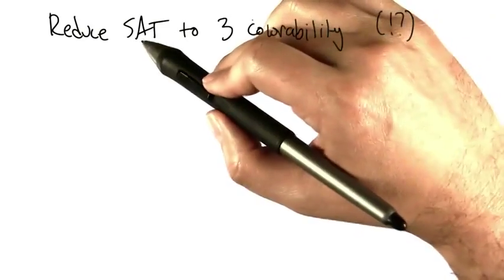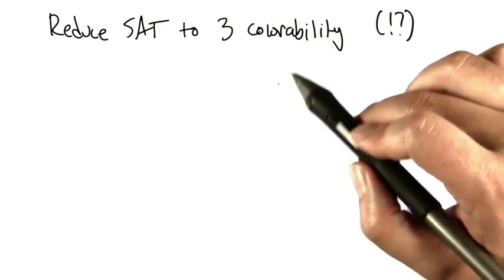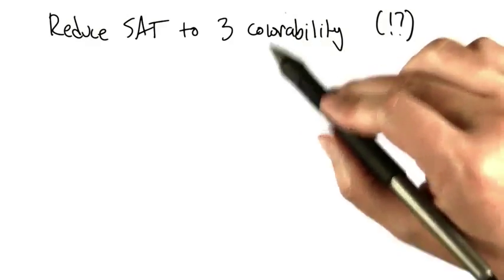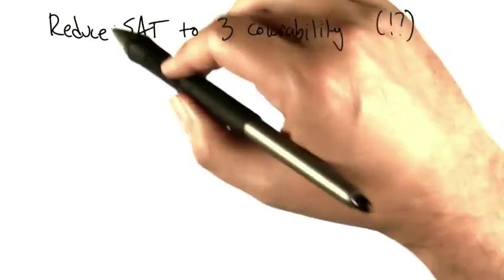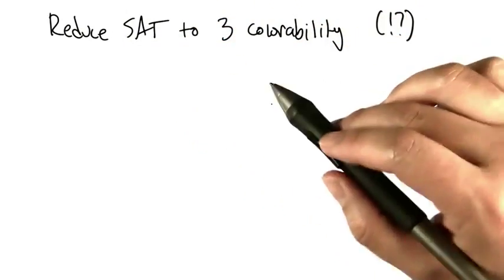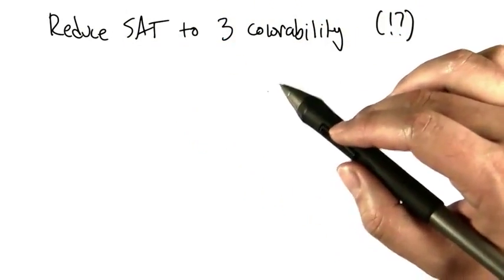We just showed that if you had a solution to SAT you could use it to solve 3-colorability, and maybe that's not so weird because 3-colorability is about finding some kind of satisfying coloring and we have a satisfying formula, so it's all not so weird.